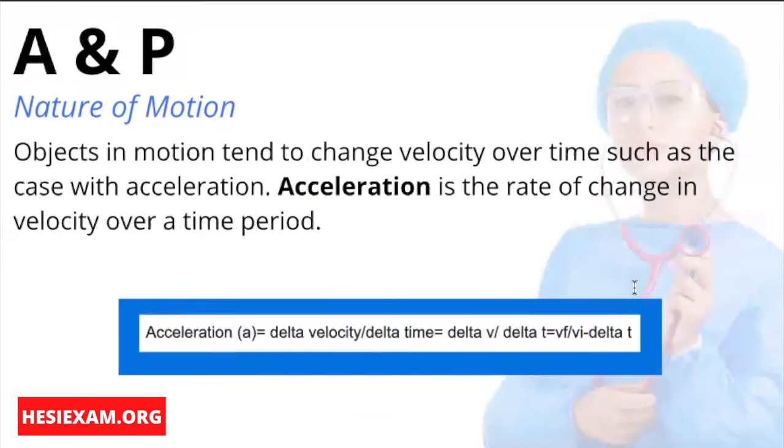Objects in motion tend to change velocity over time, such as the case with acceleration. Acceleration is the rate of change in velocity over a time period. It is expressed in terms of direction and magnitude. It is represented mathematically as A equals acceleration, VF equals final velocity, VI equals initial velocity, and delta T is the change in time.